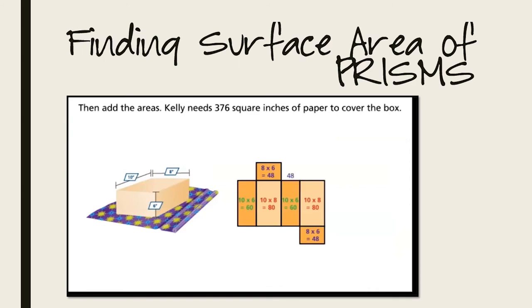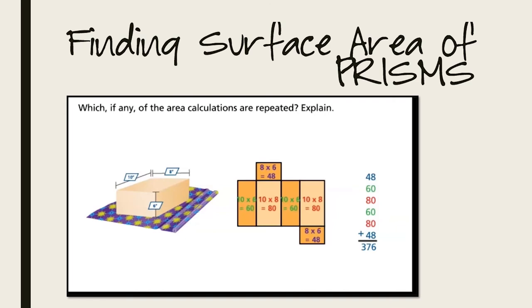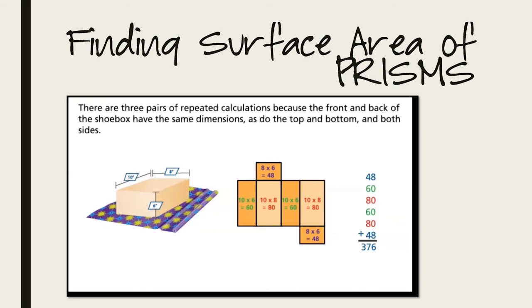Then add the areas. Kelly needs 376 square inches of paper to cover the box. Which, if any, of the area calculations are repeated? Explain. There are three pairs of repeated calculations, because the front and back of the shoebox have the same dimensions, as do the top and bottom, and both sides.